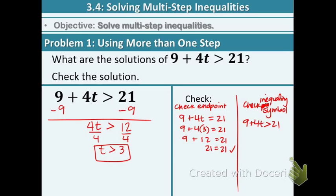Let's look at our answer right here. t is greater than 3. Well let's pick any number that's bigger than 3. So the next biggest number would be 4. So let's plug in 4. 9 plus 4 times 4 greater than 21, question mark.